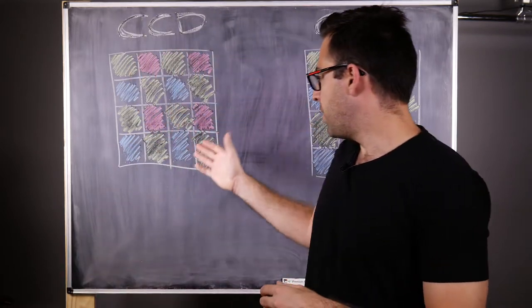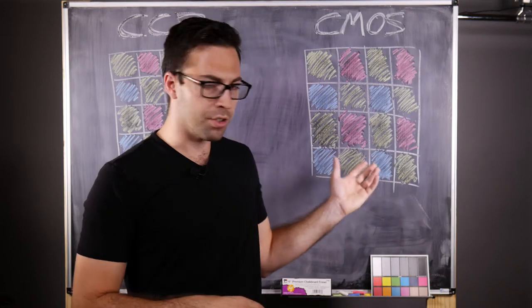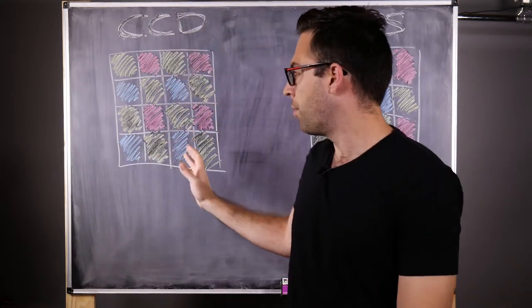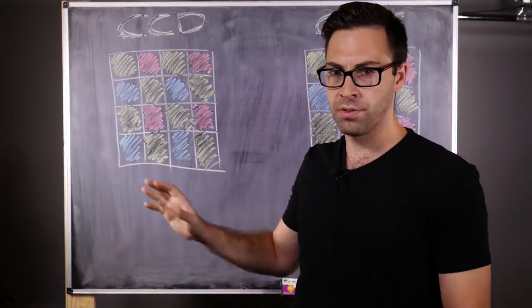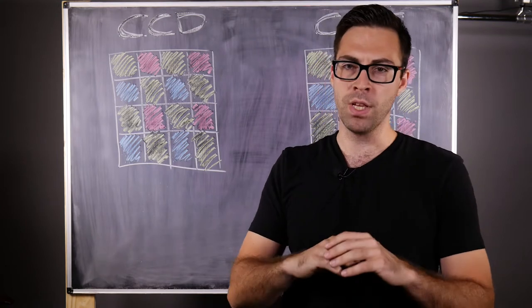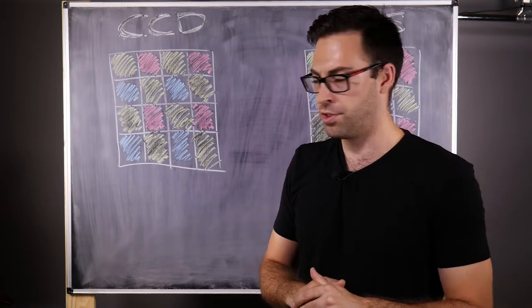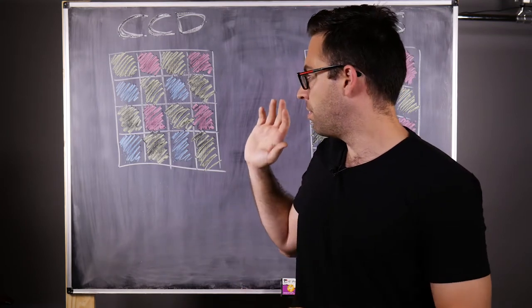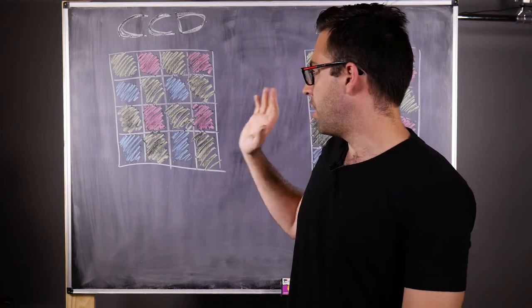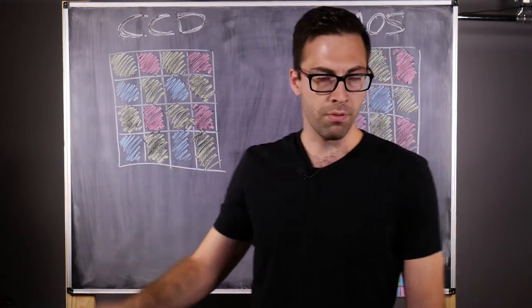But essentially, both of these, I've drawn these in a similar fashion. It's a grid of 16 squares, 4x4, let's just say it's 4x4 pixels, a very small sensor. We have megapixels, millions of pixels in our sensors nowadays, but for sake of simplicity, let's just say it's a 16 pixel sensor, both of them.